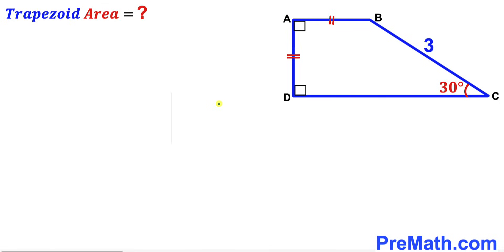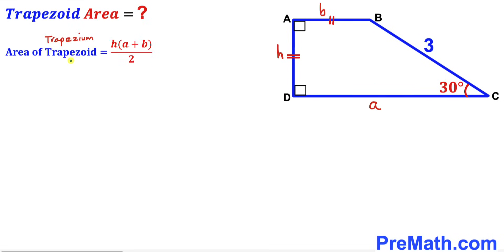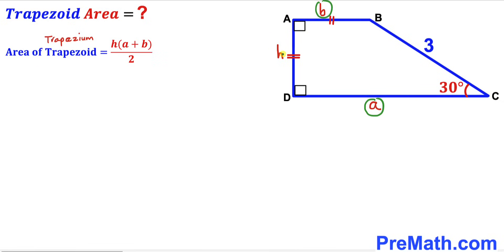Since we are interested in calculating the area of this trapezoid, let's recall the area formula. The area of a trapezoid — sometimes called a trapezium — is always equal to height h times the sum of the two bases A plus B, all over 2, where A and B are the bases and h is the height.